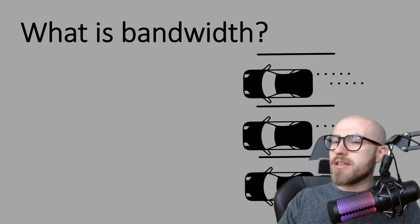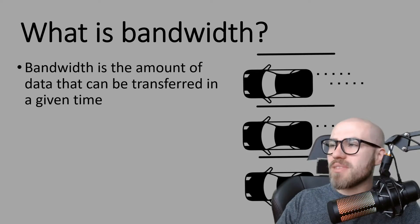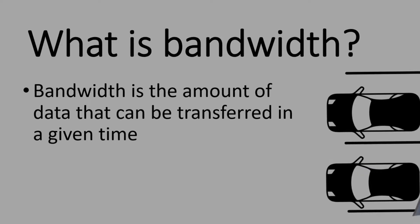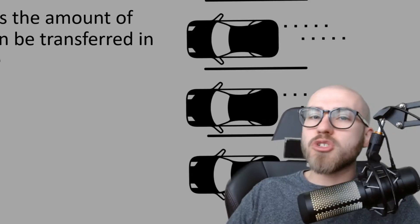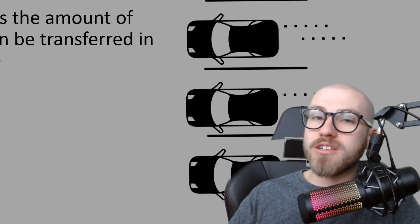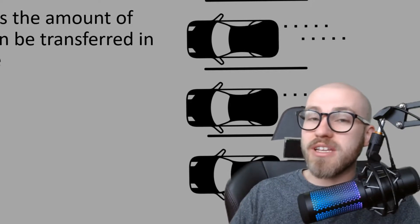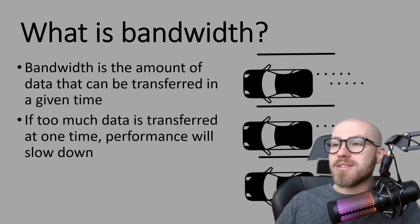So what is bandwidth? Bandwidth is the amount of data that can be transferred in a given time. This is where the picture with cars and lanes comes from. If you think about a drive on the motorway at 3 in the morning, there's not going to be much traffic — traffic being another word you can use when describing a network. But if too much data is transferred at one time, the performance will slow down.